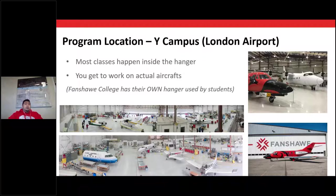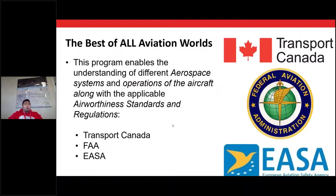This course was designed a few years ago with a lot of consultation from major aerospace companies. Bombardier and Diamond actually helped us with attributes they're looking for in future personnel in the field of aviation. The program location is the London campus — most classes will be inside the hangar, part of the school of aviation. Fanshawe has its very own hangar and lots of aircraft for students to work on. You'll be working hands-on and going through all of these aircraft to understand how they work and are built.